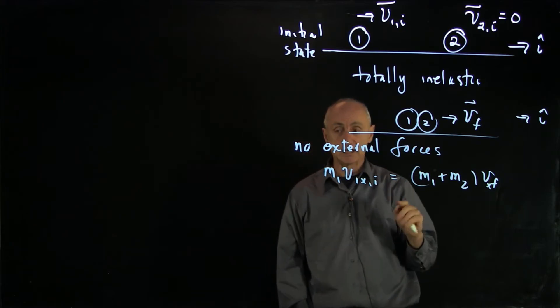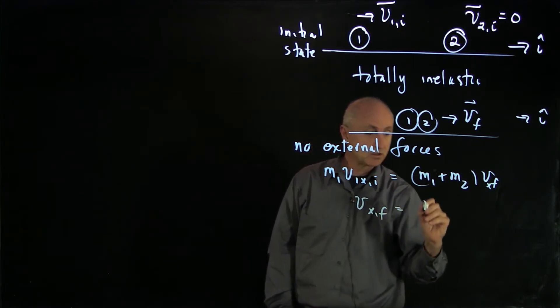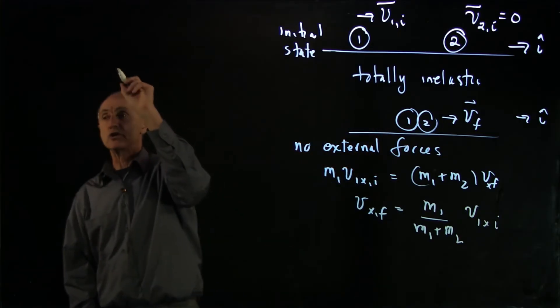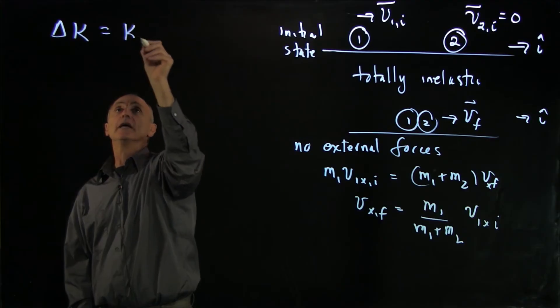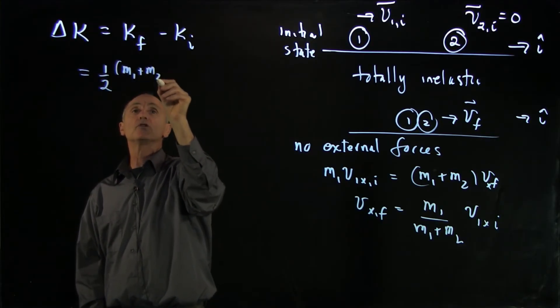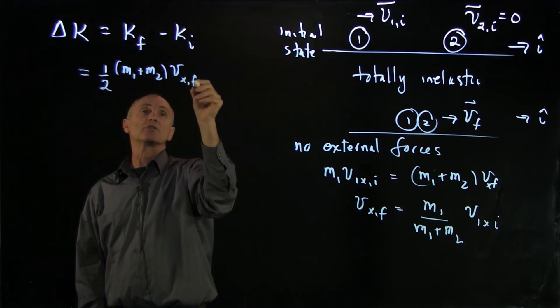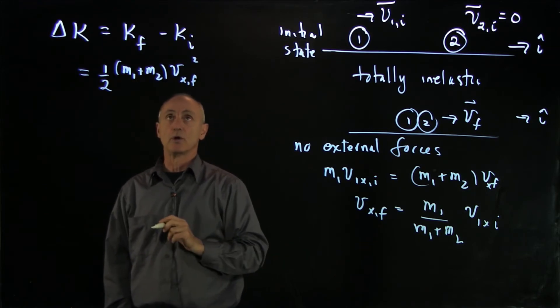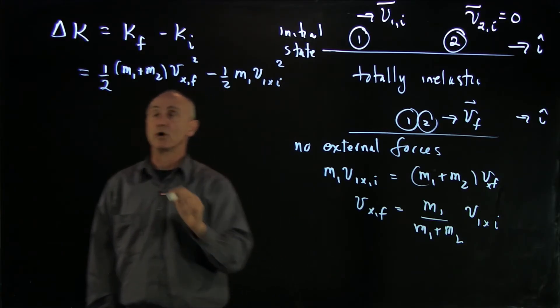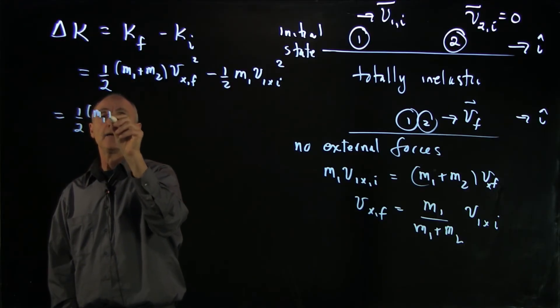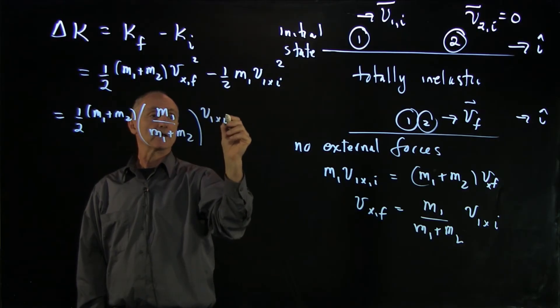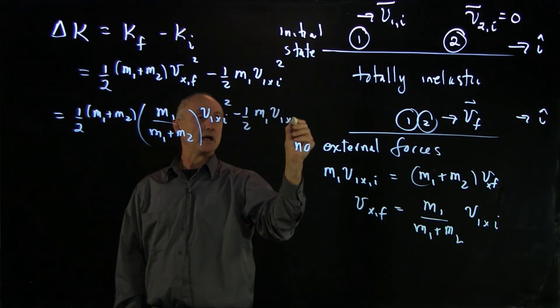In fact, we can even figure out the change in kinetic energy because we can see here that vx final is m1 over m1 plus m2 times v1x initial. And now let's ask ourselves in a totally inelastic collision, what is the change in the kinetic energy? So our final kinetic energy is one half m1 plus m2 times vx final squared. And we just have this initial kinetic energy coming in. Now we have a solution for our problem. So let's just put that in, m1 plus m2 times m1 over m1 plus m2 times v1x initial squared minus one half m1 v1x initial squared.